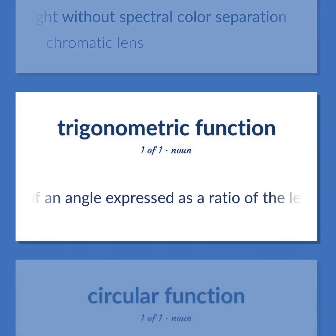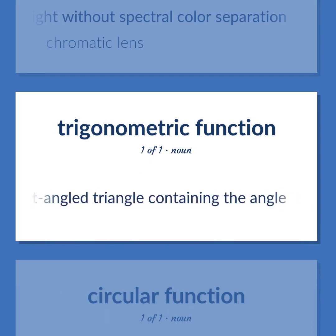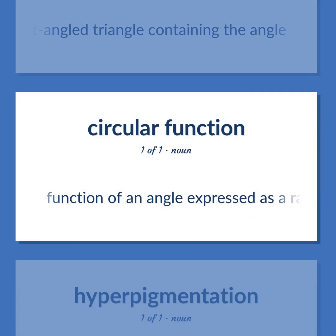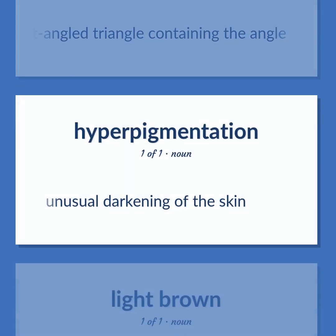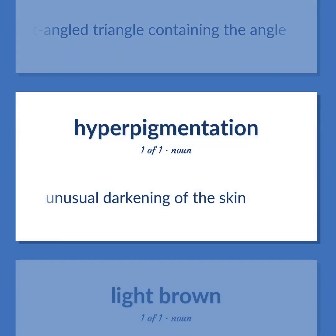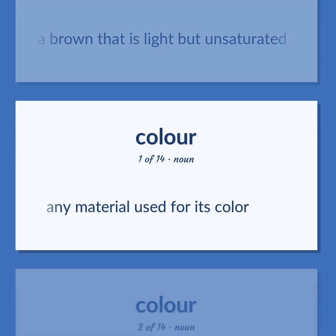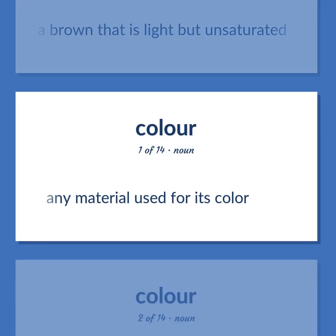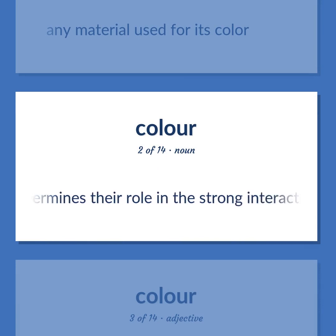Function of an angle expressed as a ratio of the length of the sides of a right-angled triangle containing the angle. Unusual darkening of the skin. A brown that is light but unsaturated. Any material used for its color. Physics: the characteristic of quarks that determines their role in the strong interaction.